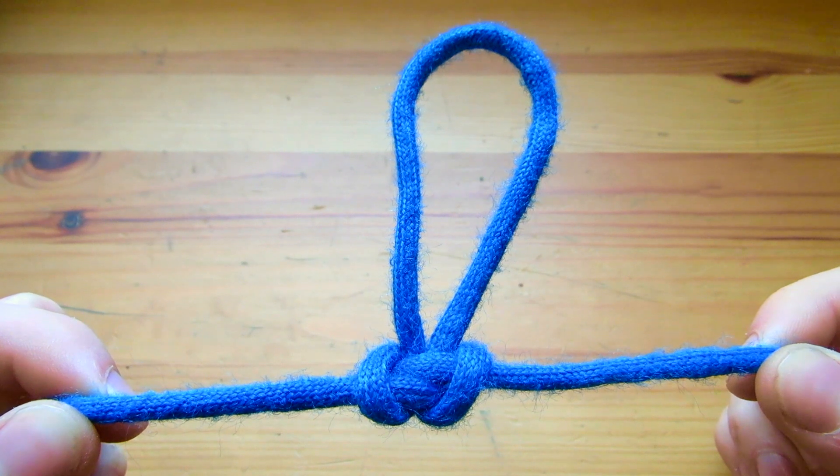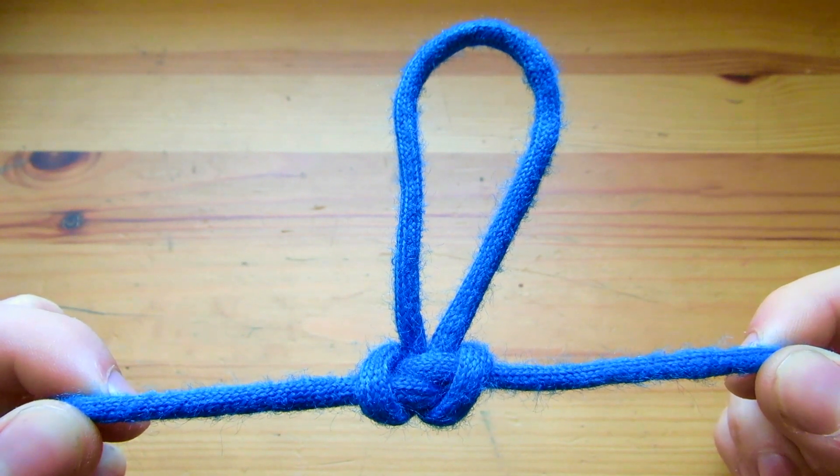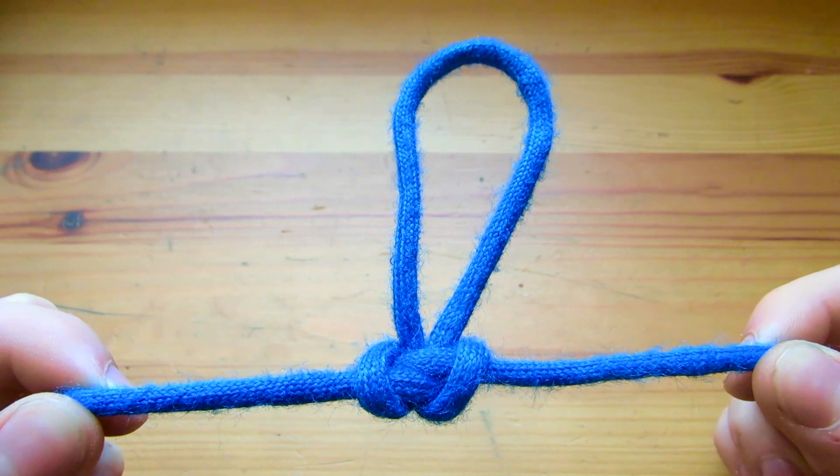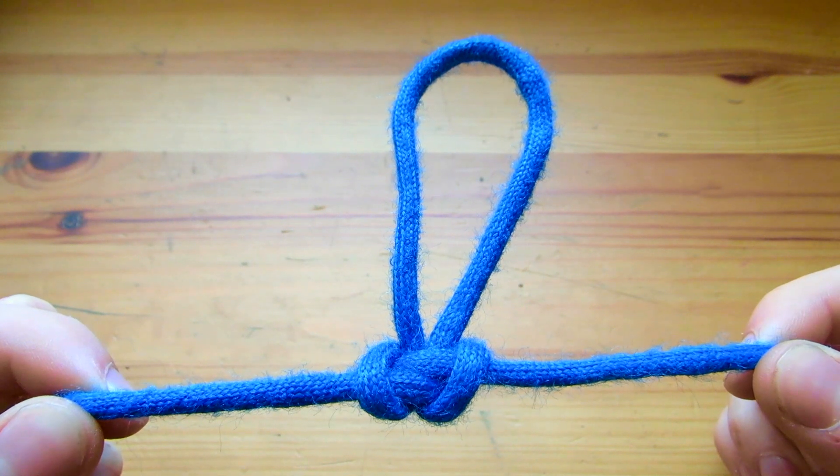The alpine butterfly is a strong, thick stoop knot that is non-biting and can be tied in the bite, meaning you don't need an end and it can be tied in the middle of a piece of rope.